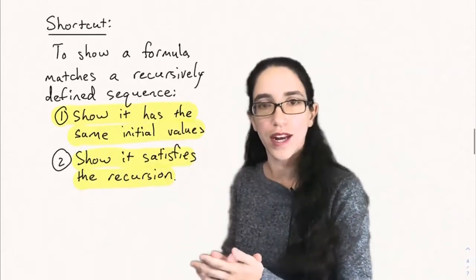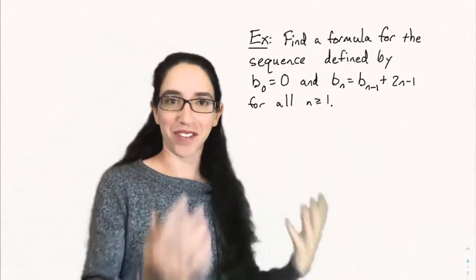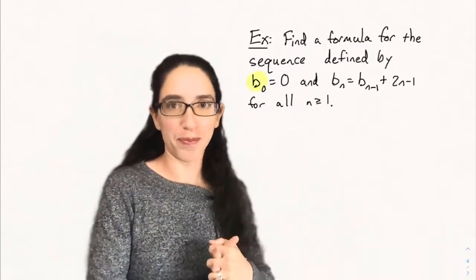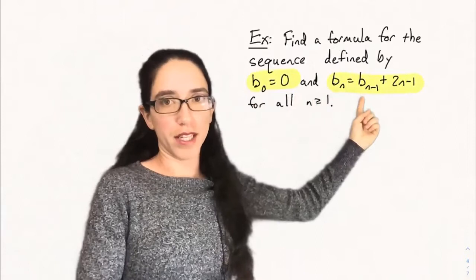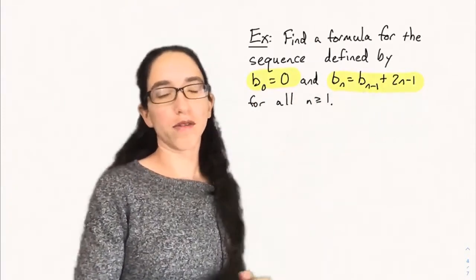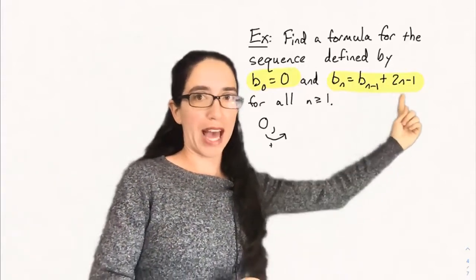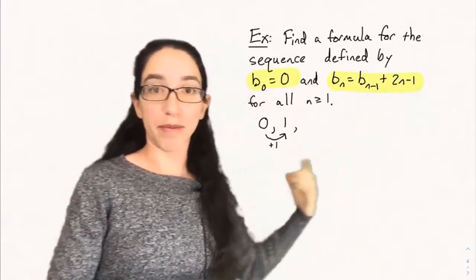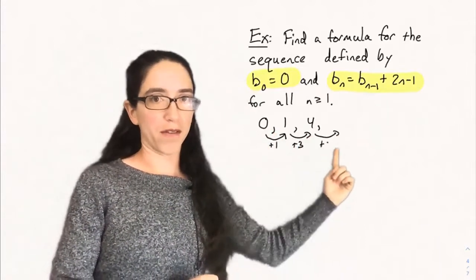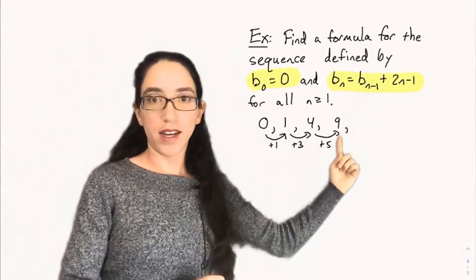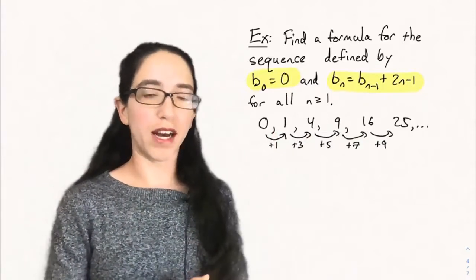Let's see an example where we're not only going to prove an explicit formula, but find one first when we don't know it right off the bat. Say we have the sequence defined by b₀ equals 0, and bₙ equals bₙ₋₁ plus 2n−1 for all n greater than 1. So we start at 0, and each time we add the next odd number, 2n−1. So we start at 0, add 1 to get 1, then add 3 to get 4, then add 5 to get 9, then add 7 to get 16, then add 9 to get 25, and so on.